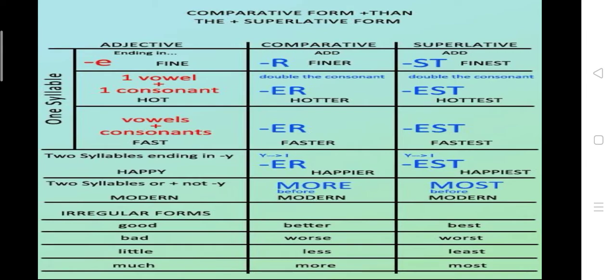When the word is of two syllables and it ends in Y, we simply turn Y into I, and then ER and EST would be added — so Y turns into I in both the comparative and the superlative degree. But if the word is of two syllables but not ending in Y, we have to add 'more' and 'most' before the comparative and the superlative degree.